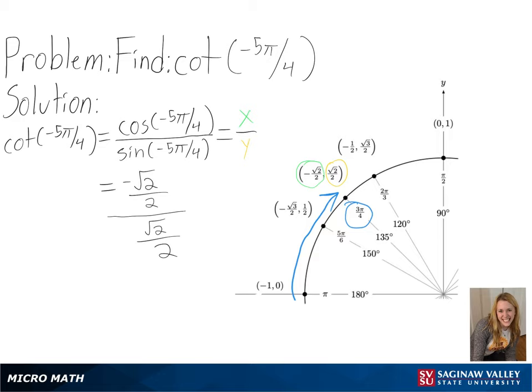So we will get negative square root of 2 over 2 divided by the square root of 2 over 2. And simplifying this, we get negative 1 as our final answer.